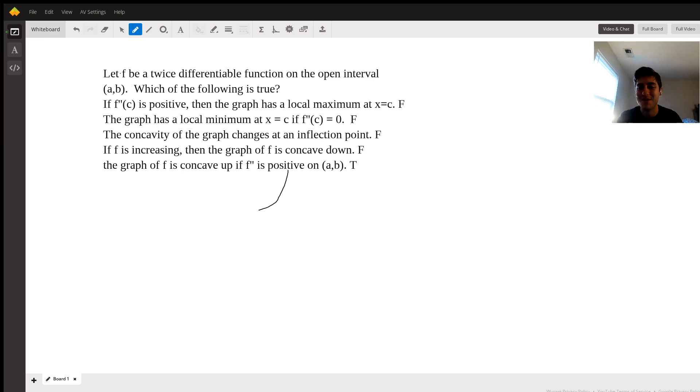So finally, the final statement we have to consider is in fact true. The graph F is concave up if F'' is positive on the open interval of A to B. So that is all the claims that were asked to be considered. Thank you very much for watching.